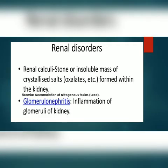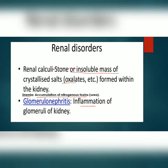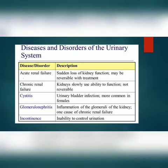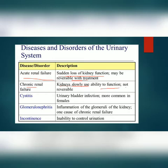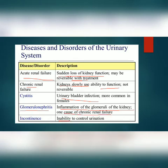Now we come to renal disorders. Renal calculi are stones or insoluble masses of crystallized salts formed within the kidney. Uremia is the accumulation of nitrogenous toxins. Glomerulonephritis is inflammation of the glomeruli of the kidney. Acute renal failure is a sudden loss of kidney function that may be reversible. Chronic renal failure involves kidneys slowly losing ability to function and is not reversible. Cystitis is urinary bladder infection, common in females. Incontinence is the inability to control urination, and glomerulonephritis is also one cause of chronic renal failure.